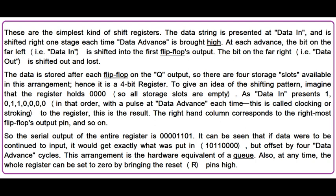To give an idea of the shifting pattern, imagine that the register holds 0, 0, 0, 0, so all storage slots are empty. As data-in presents 1, 0, 1, 1, 0, 0, 0, 0 in that order, with a pulse of data advance each time — this is called clocking or stroking — to the register, this is the result.